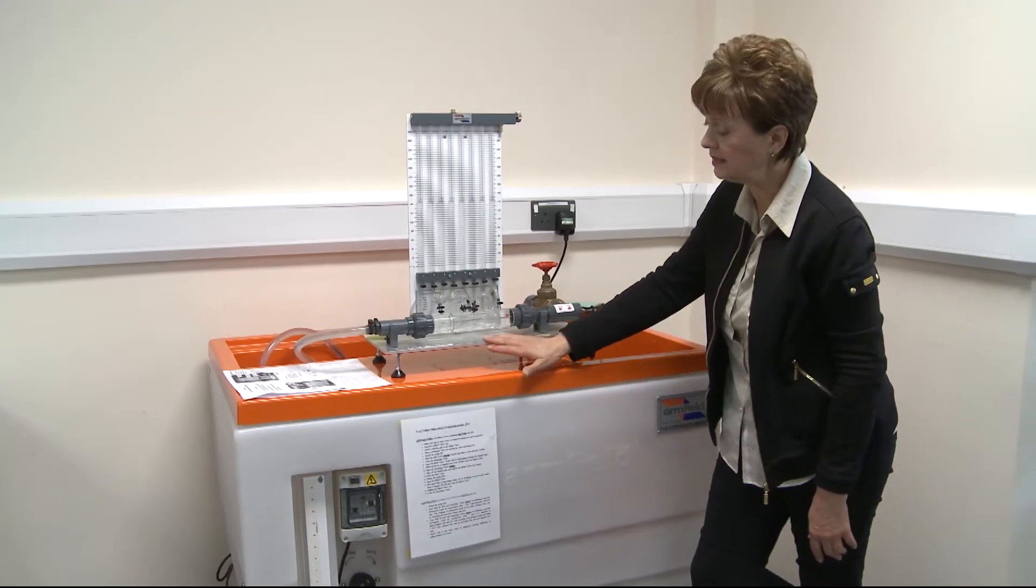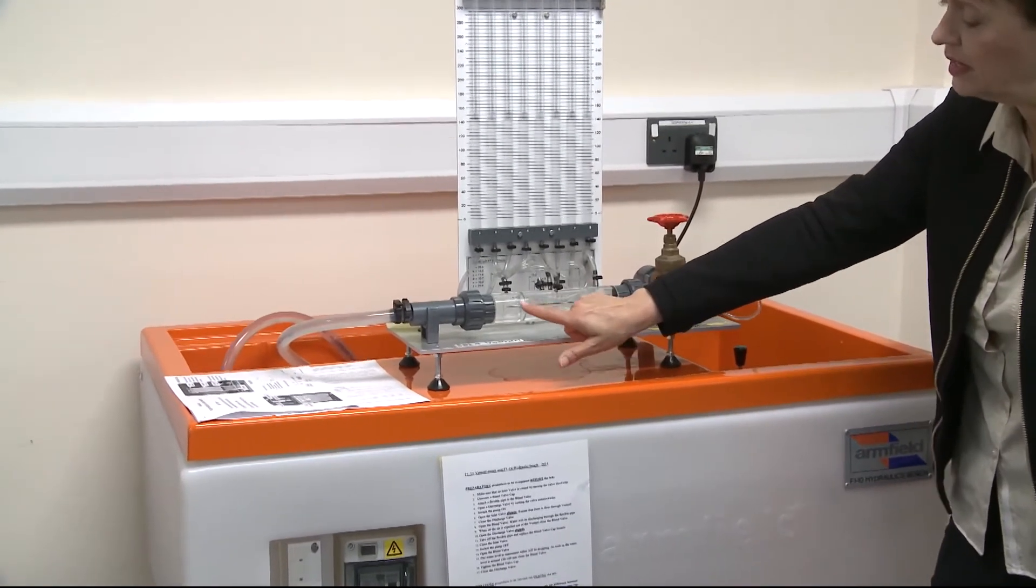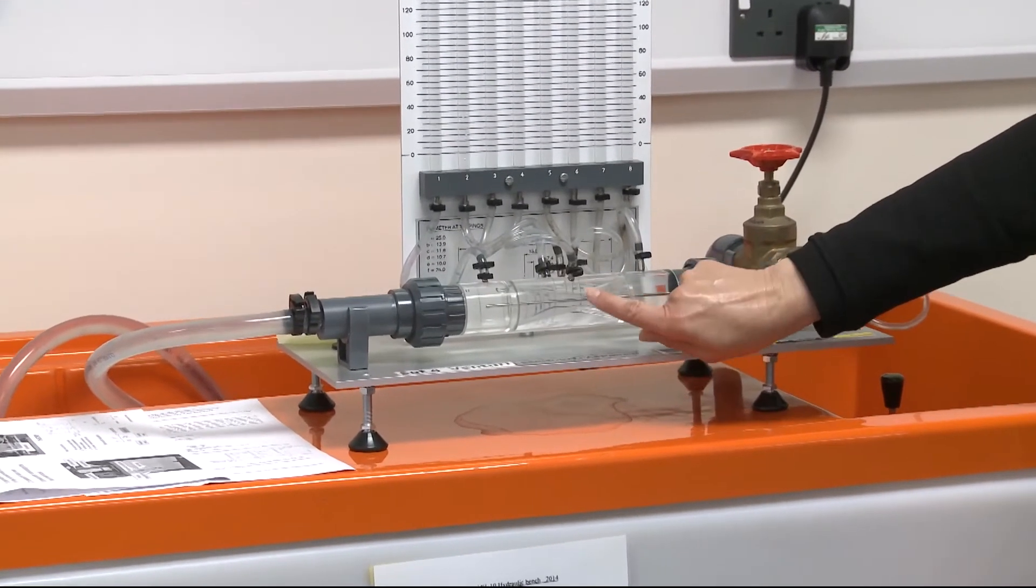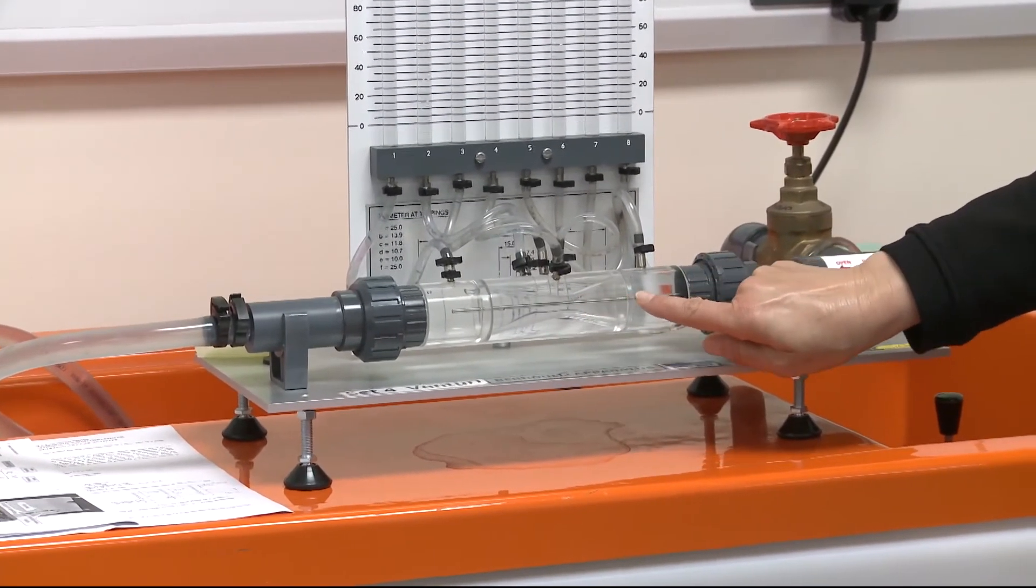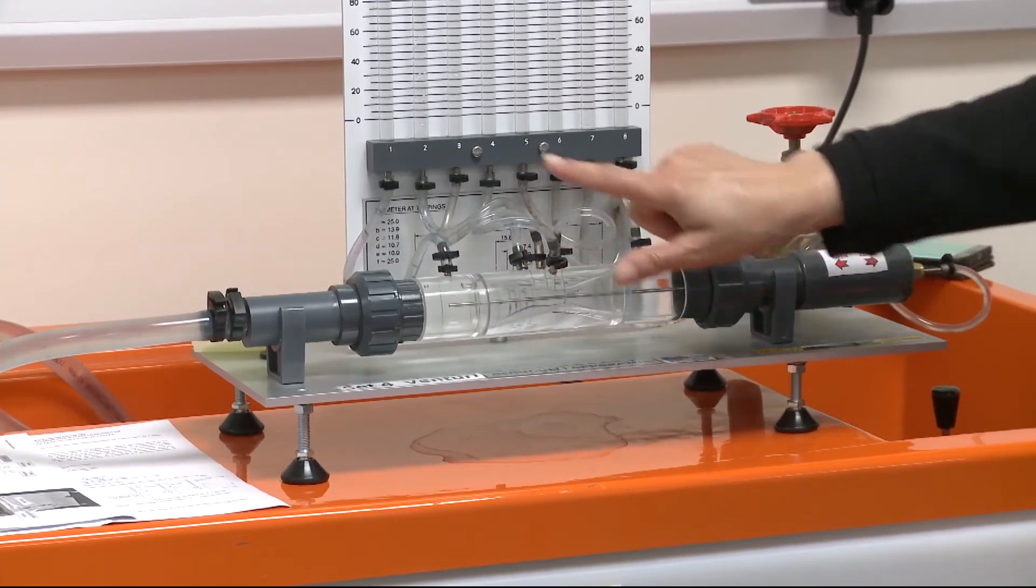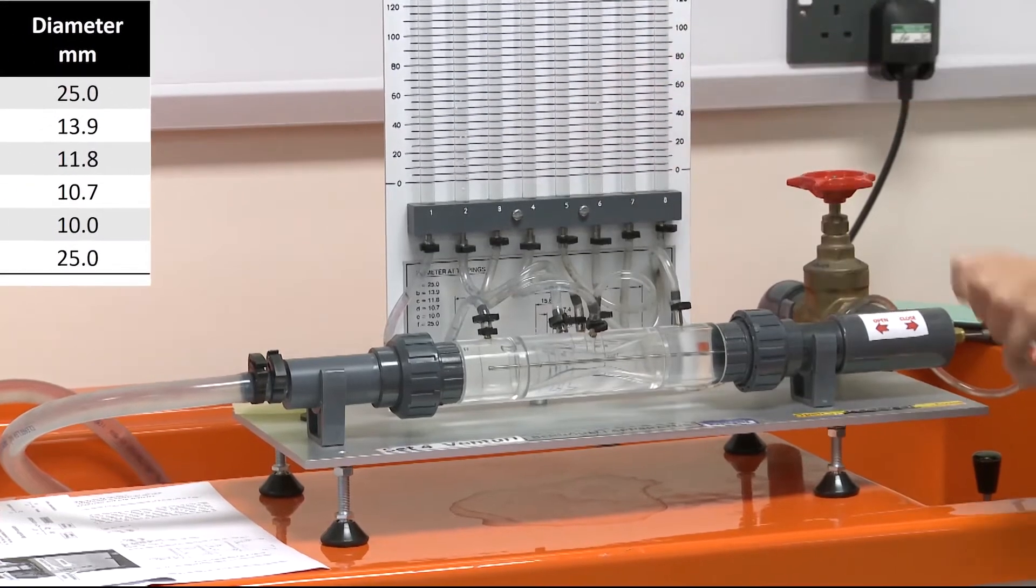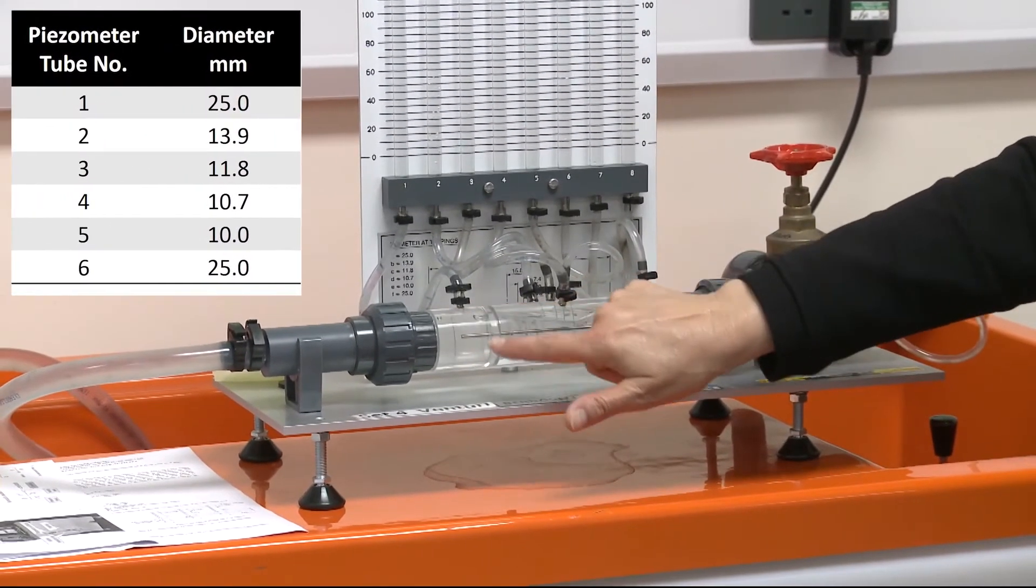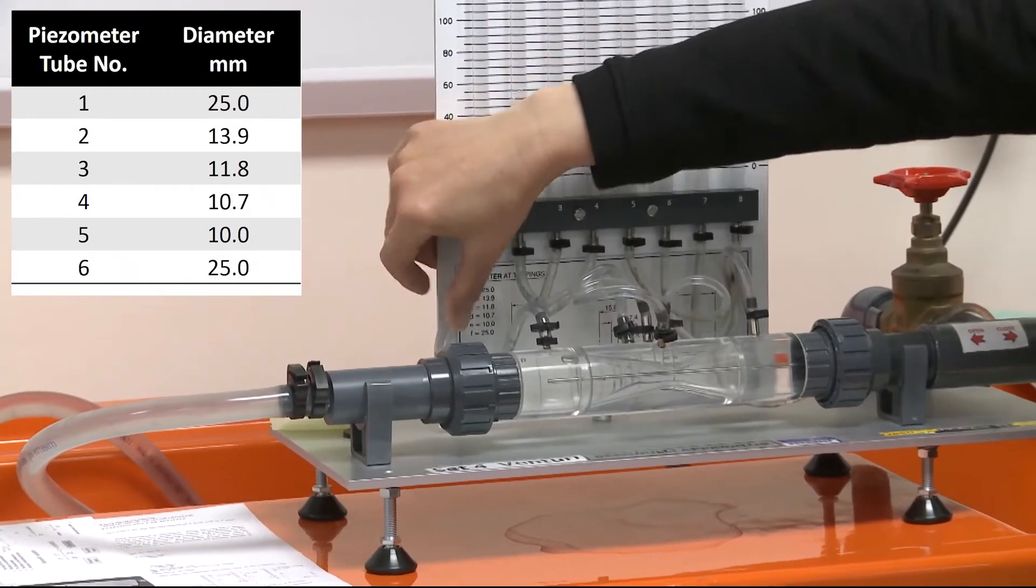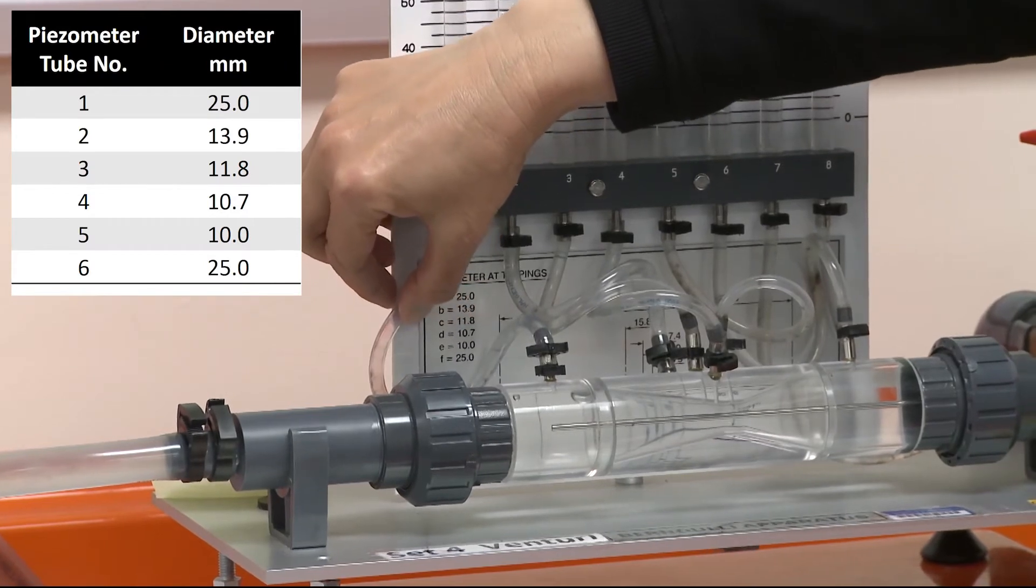Venturi meter pipe, you can see here, consists of three sections: convergence section, which is reduction in diameter along the pipe, the throat, which is the smallest diameter, and divergent section. Along the pipe, we have piezometric tubes connected. And we will be taking measurements for piezometric tubes from number one to number six. Diameters for piezometric tube for each location along the pipe where piezometric tubes are connected are shown at the front of the venturi meter. So these diameters you will need to calculate the cross-section area.